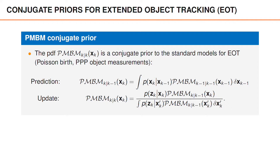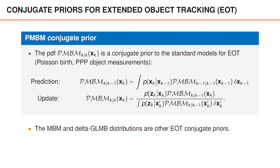With the standard model, we refer to a model which has the same properties as the standard model for point objects, except that the single object measurement model is a Poisson point process. This result is quite important and can be used to derive a range of different PMBM algorithms. There are also other conjugate priors such as the MBM and delta GLMB, even though we normally don't use these with the Poisson birth model.